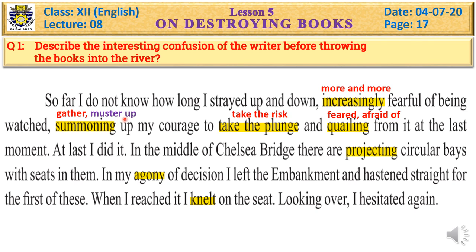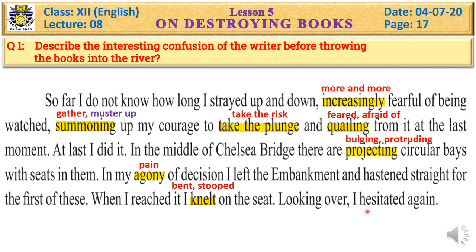In this part of the paragraph we will discuss two questions: how did the writer muster up his courage at last to fling the books into the river, and what were his feelings after throwing the books? At last, I did it. In the middle of Chelsea Bridge there are projecting — bulging, protruding — circular bays with seats in them. In my agony of decision, I left the embankment and hastened straight for the first of these. When I reached it, I knelt on the seat, bent and looked over — but then I hesitated again, afraid of what might happen.